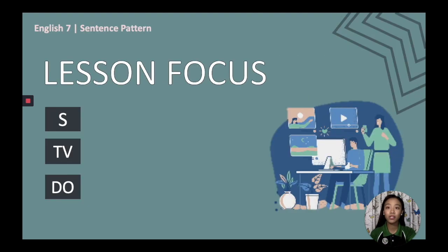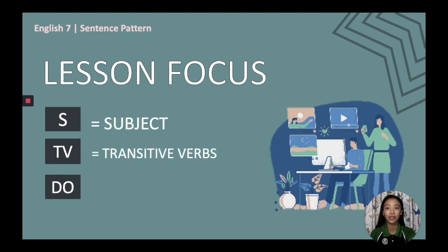We are now done recalling the SLVC sentence pattern. This time, we shall turn our attention to today's discussion, which is the S-TV-DO sentence pattern. S still stands for subject, TV stands for transitive verb, and DO stands for direct object.